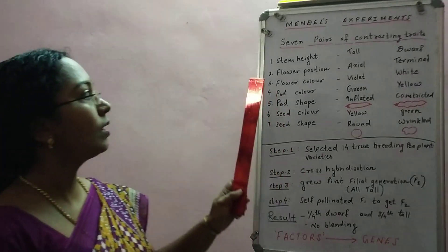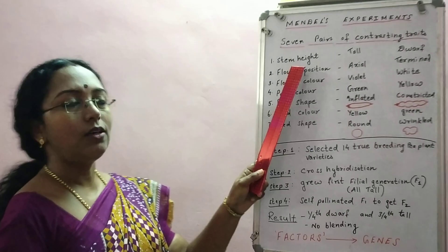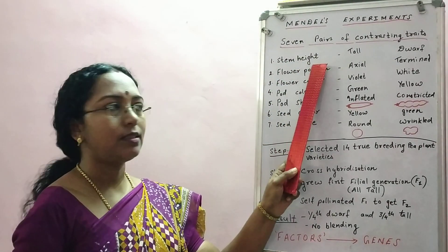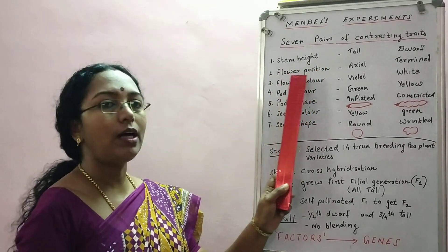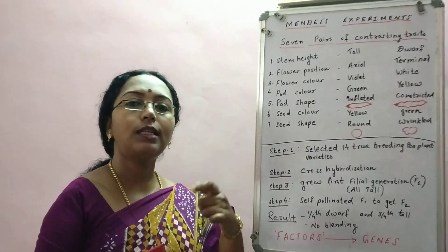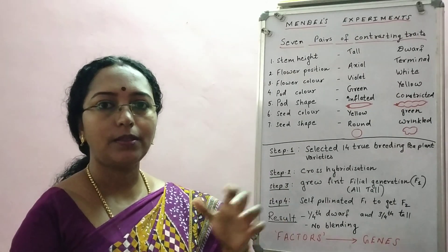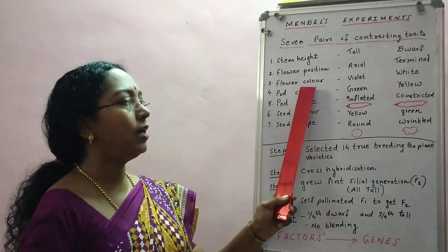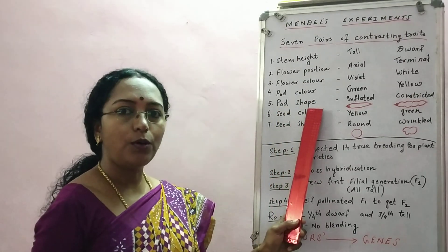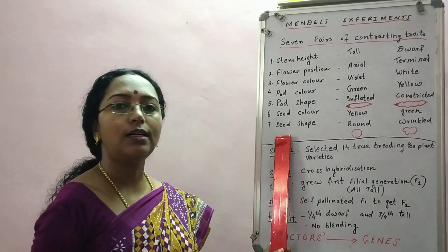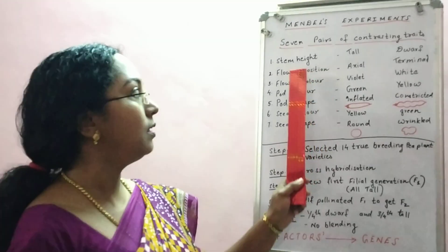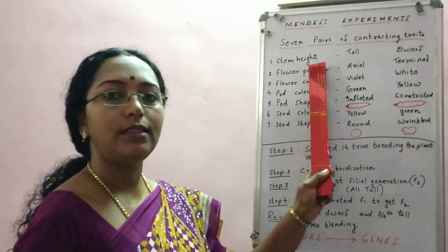The first character or trait was stem height. The next one was flower position — where on the plant the flower is located. Next was flower color, then pod color, seed color, and seed shape — seven characteristics in total.